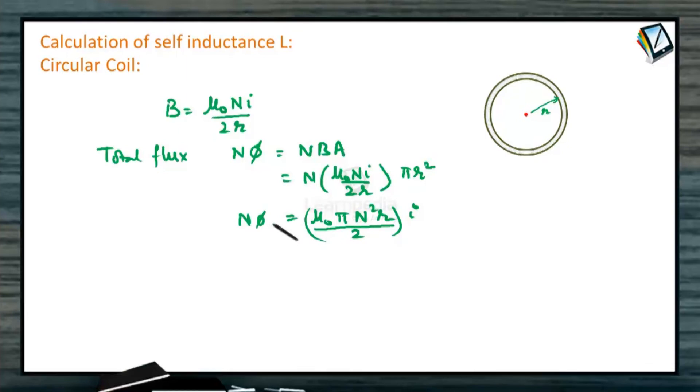The total flux is equal to a constant times I. Now we can compare this with the given equation. Now compare with Nφ equals Li. So comparing Nφ equals Li, we can simply get the value of self induction of the circular coil as μ₀πN²R divided by 2.